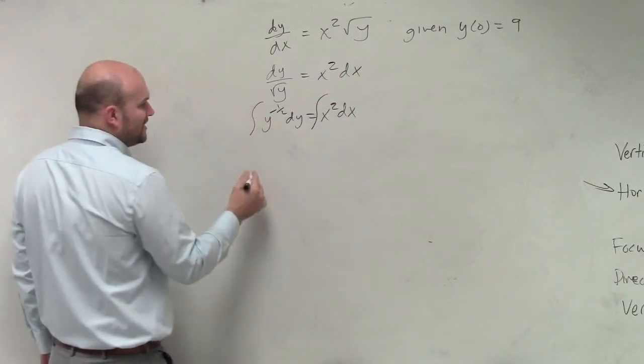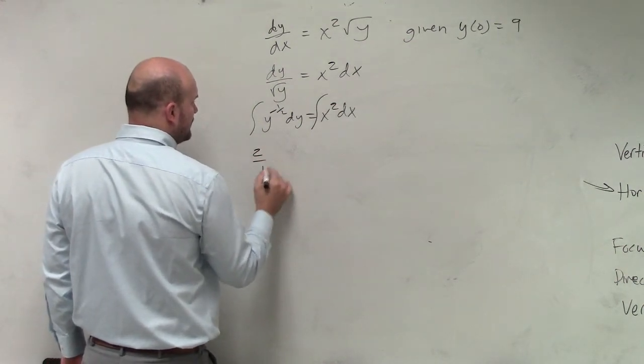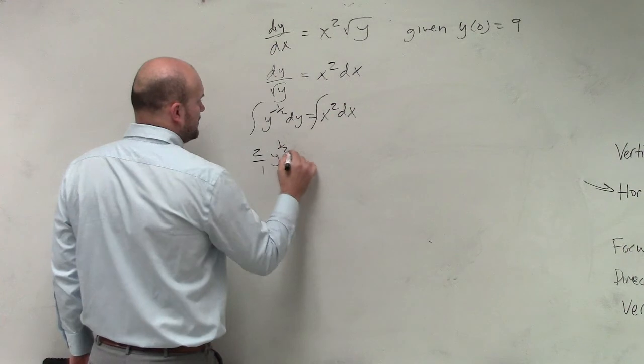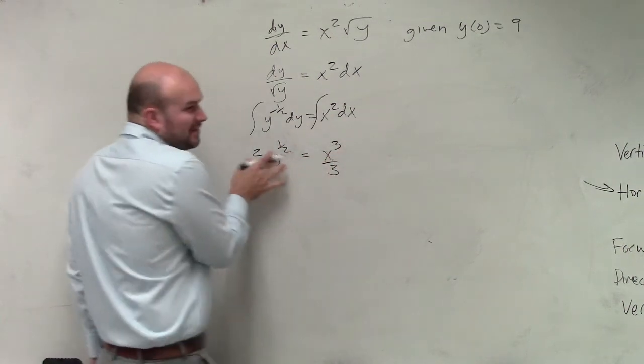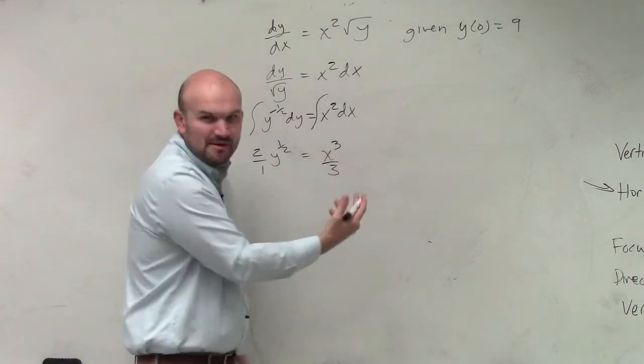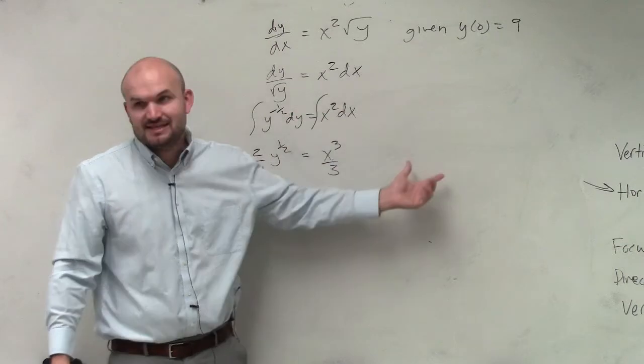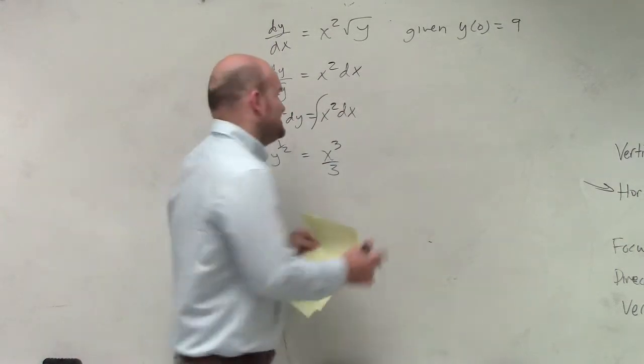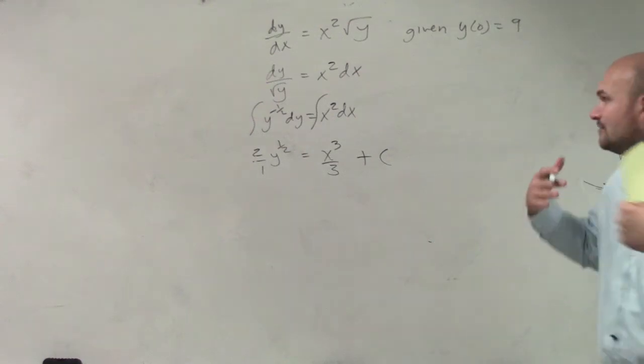So here in this case, I'm going to have 2 over 1 times y to the 1 half equals x cubed over 3. And then remember, we could add a plus c on both sides. But if you guys remember the last class period, I said once you add a plus c and a plus c, then you get the c's on the same type. You still just have a constant. So we're just going to say we're going to have one constant.